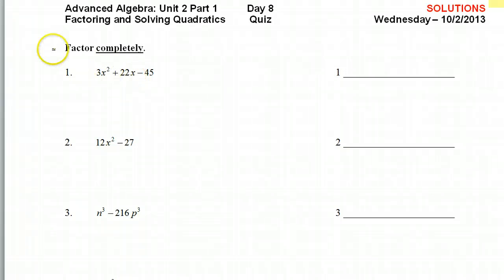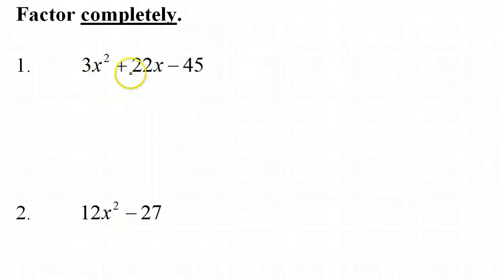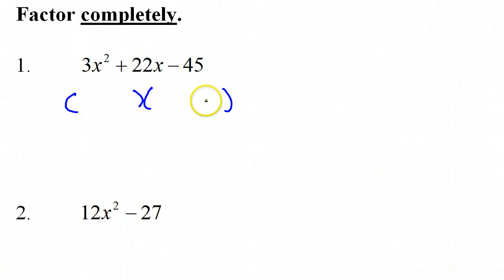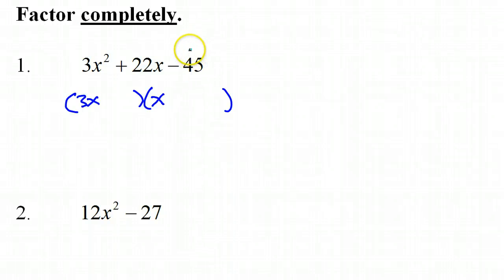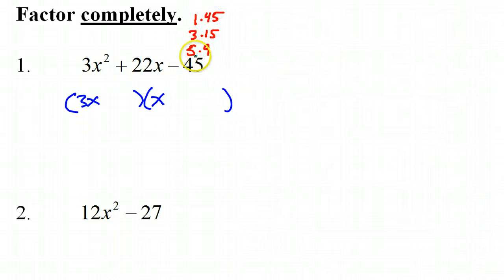Number one — if we want to factor completely, the first thing we do is check to see if there's a common factor. I don't see anything that divides into all three of these. When I have a trinomial like this — a three-piece — it usually factors as a binomial times a binomial. I start by looking at the 3x squared and ask myself: what times what makes 3x squared? That can only be 3x times x. Then I look at the 45. What times what makes 45? The first thing that pops into my head is 5 times 9, because 5 times 9 is 45. I also know that this is 3 times 15, and there's always 1 times 45, but I'm really hoping the 5 and the 9 will do it.